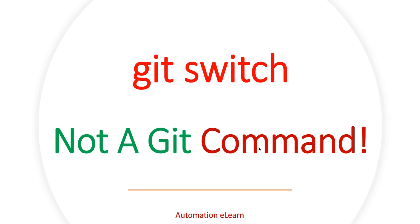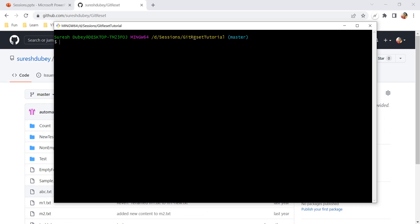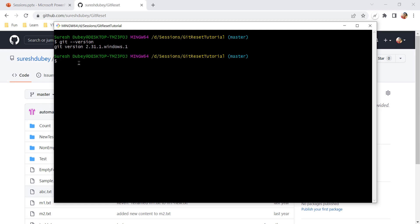In this video you will learn about the git switch command and how to resolve this error. Git switch is a relatively new command and it was released after version 2.23. So if you are using a Git version below 2.23, you would not get the switch command. Here I am under the git-reset tutorial repository, and let me check the version I am currently using. My Git version is 2.31, which is above 2.23, so I should be getting the switch command. Let's give it a try.